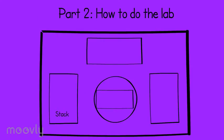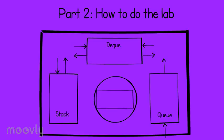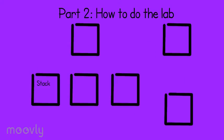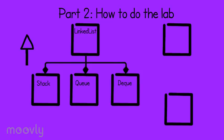Part 2: how to do the lab. A stack is a last-in, first-out data structure. We can only add things onto the top of our stack and we can only take things off from the top of our stack. A queue is a first-in, first-out data structure. Much like a line at the testing center, the first thing added to our queue is the first thing we take out of our queue. A deck is similar to a queue, but we can add or remove something from either side of the deck. The stack, deck, and queue should all have a linked list inside of them and should not inherit from anything.